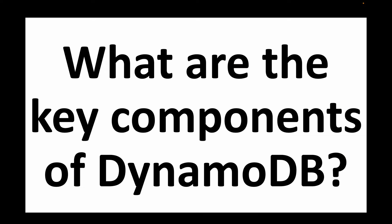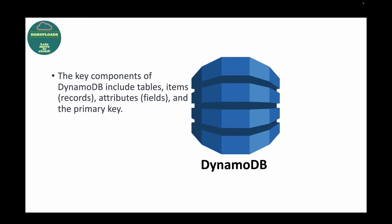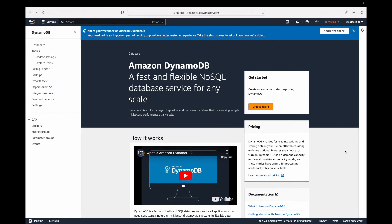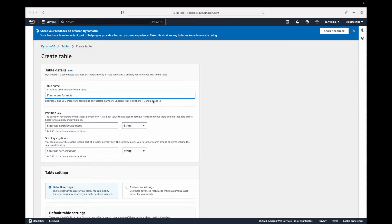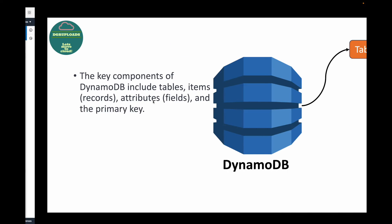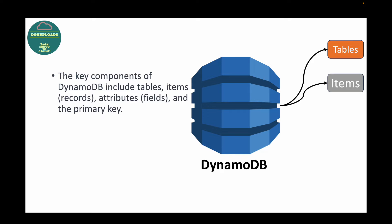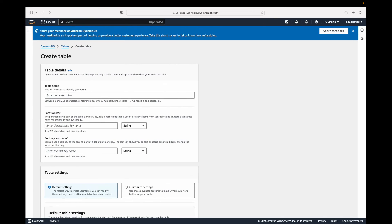The next question is: what are the key components of DynamoDB? First, we have tables — unlike RDS where you create a database and then tables inside it, with DynamoDB you go straight ahead and create a table. Within tables we have items, which are your data records, and then we have attributes, which are your fields defining what kind of data you want to store. We also have the primary key, which helps maintain unique sets of data.